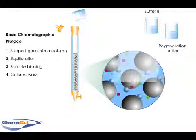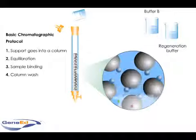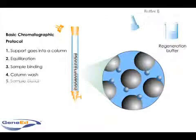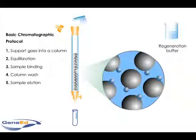The impurities are washed away with a buffer, which is usually the same as the buffer used for equilibration. The bound sample is then eluted and collected by washing the support with the appropriate buffer.